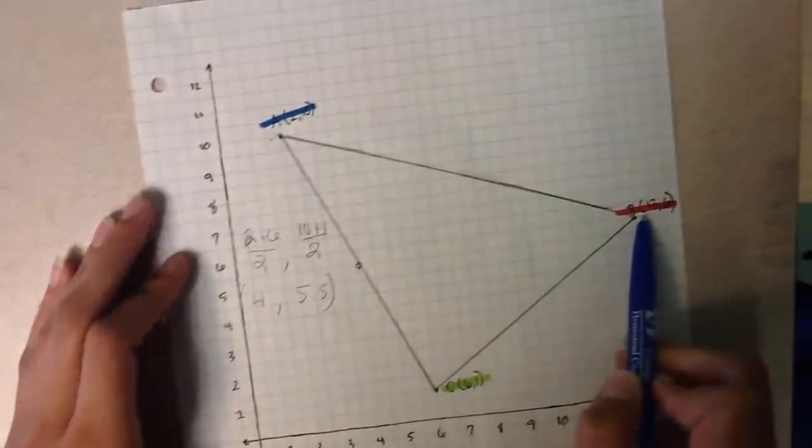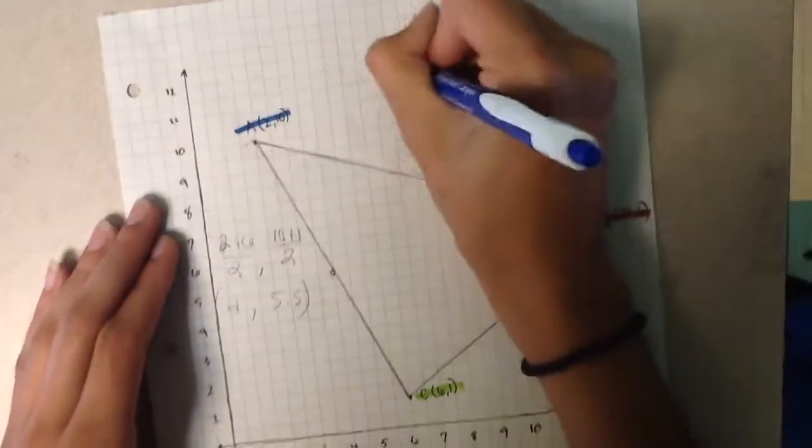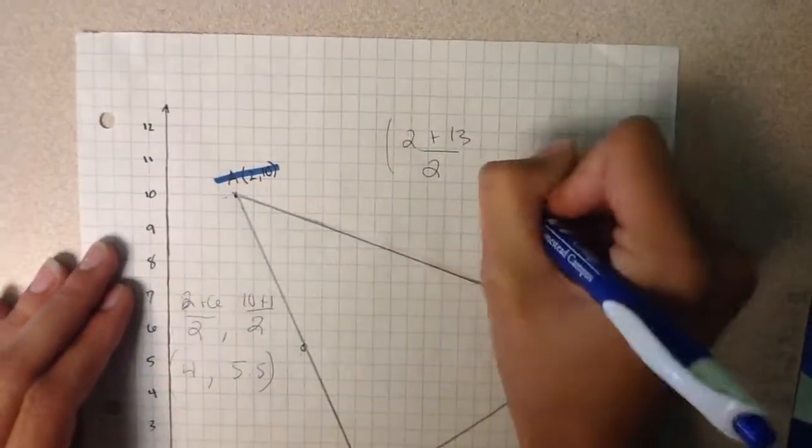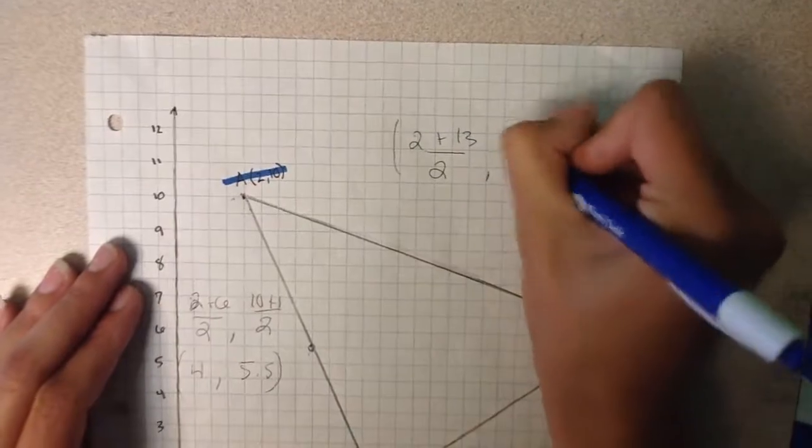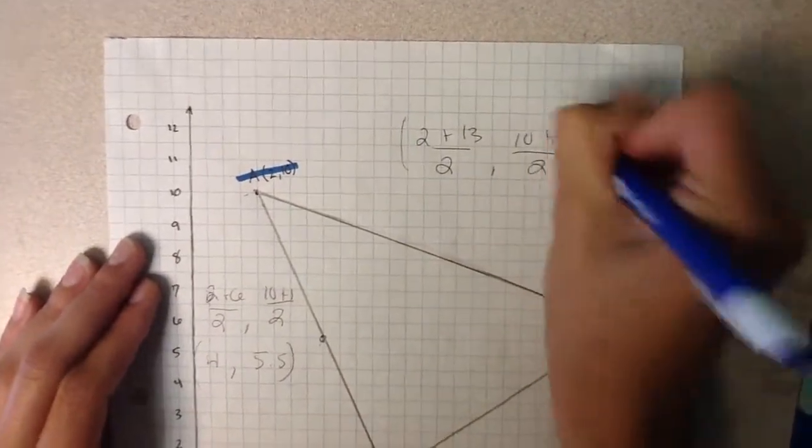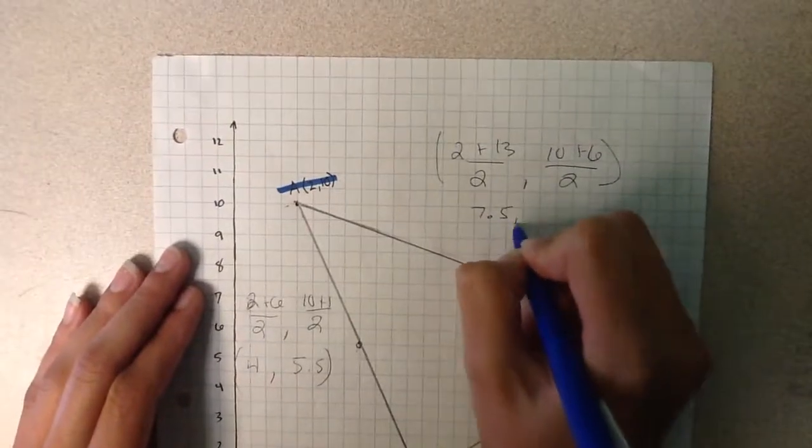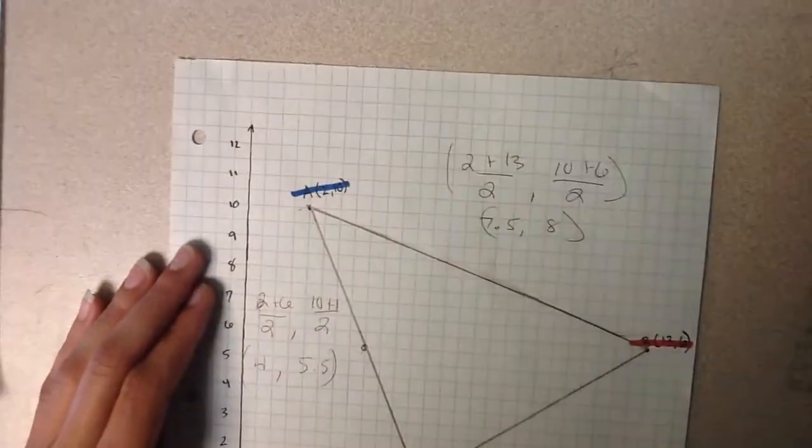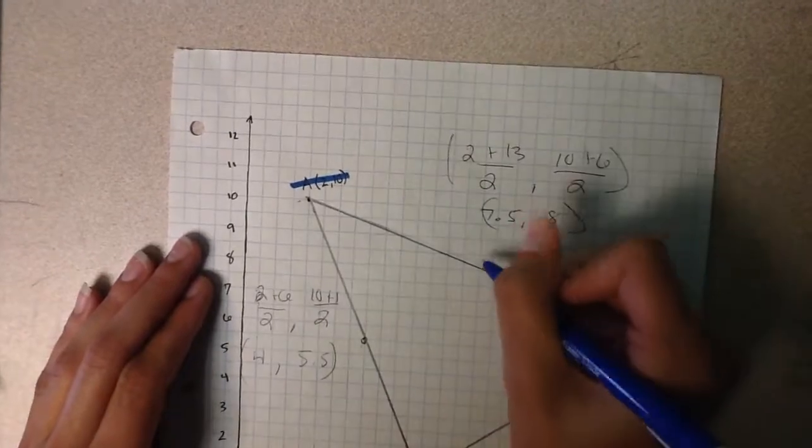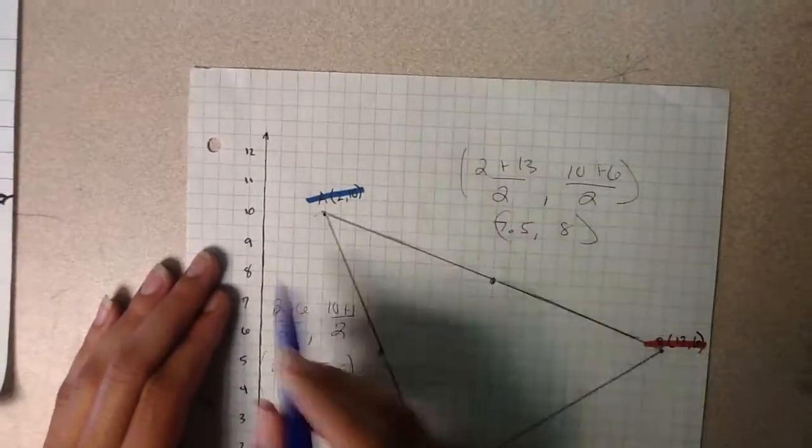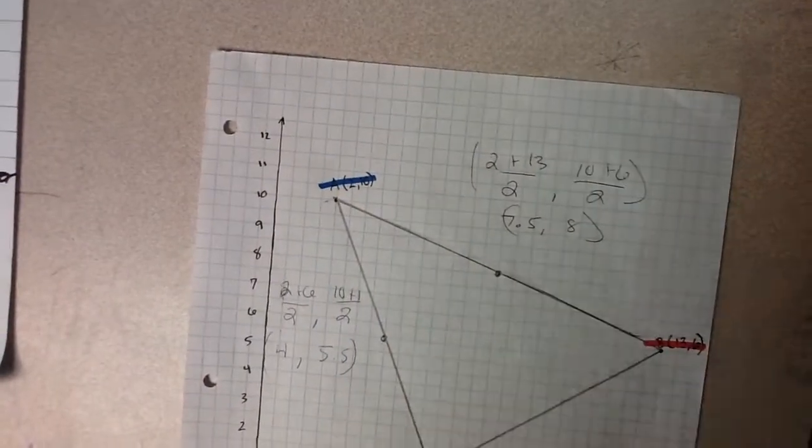For line segment AB, it's going to be 2 plus 13, divide that by 2, comma, 10 plus 6, divide that by 2. This is going to get you 7.5, comma, 8, after doing everything. So 7.5, go all the way up to 8, which is going to be right there. The line's a bit off, but I didn't have an actual ruler.